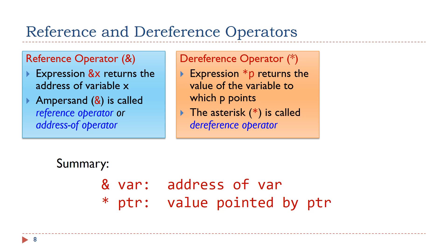Here is the summary. The reference operator works on variables, and it can be read as 'address of'. Therefore, &vr can be read as 'address of vr'. At the same time, the dereference operator works on pointers, and it can be read as 'value pointed by'. Therefore, *ptr can be read as 'value pointed by ptr'.